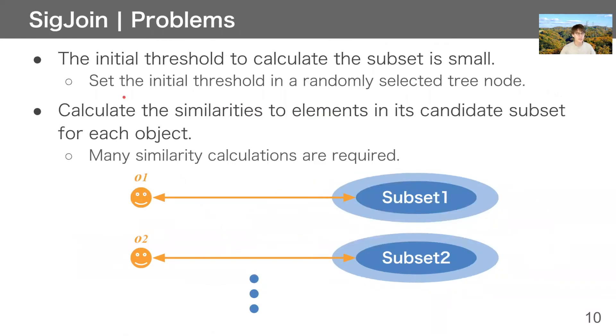However, SicJoin has problems. The first one is the initial threshold to calculate the subset is small, because SicJoin sets the initial threshold in a randomly selected tree node. When initial threshold is smaller, many unnecessary objects are in candidate subset, which decreases speed. The second one is that it calculates the similarities to elements in its candidate subset for each object, so many similarity calculations are required.